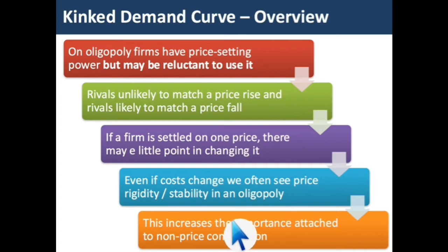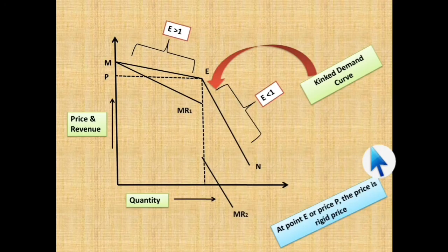This increases the importance attached to non-price competition. Non-price competition is seen in which kind of market? Obviously it will be an oligopoly market. Non-price competition means it will be an oligopoly market, because you have to be fixed on one price. So this is the graph of the kinked demand curve. Why is there a kink?